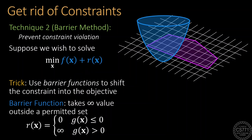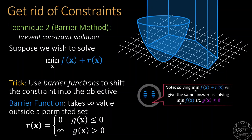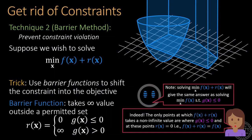Once we have such a barrier function, we can go ahead and eliminate the constraint and optimize f plus r as an unconstrained optimization problem instead. The first order optimality technique or a gradient descent variant can be used to solve this problem. It is easy to see that optimizing f plus r will yield the exact same answer as the original constraint optimization problem.